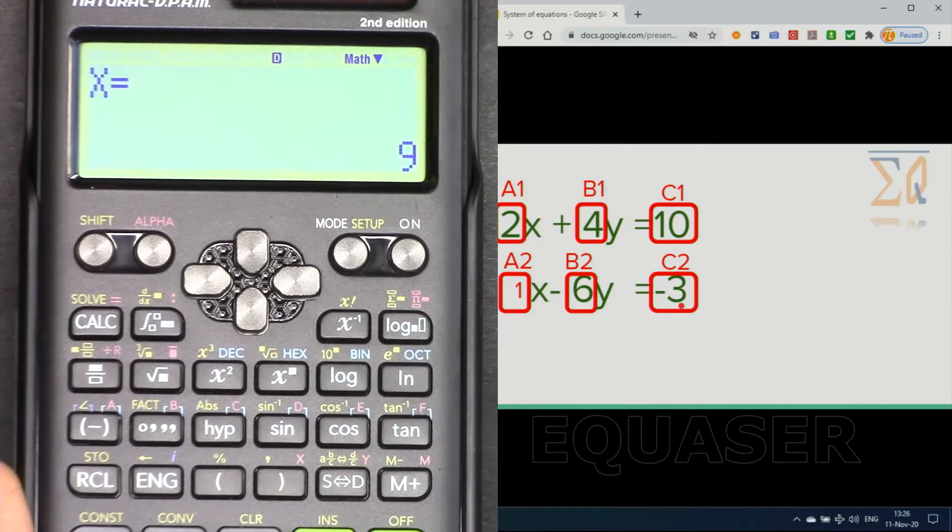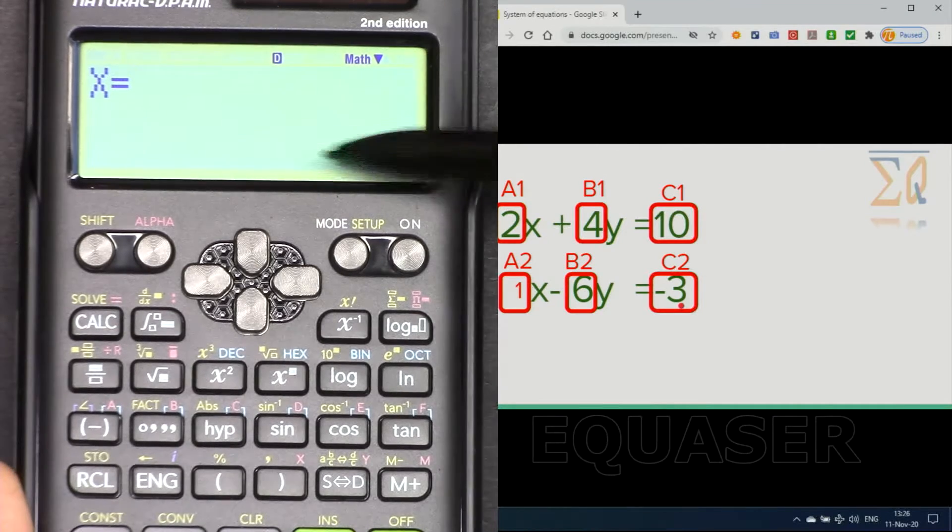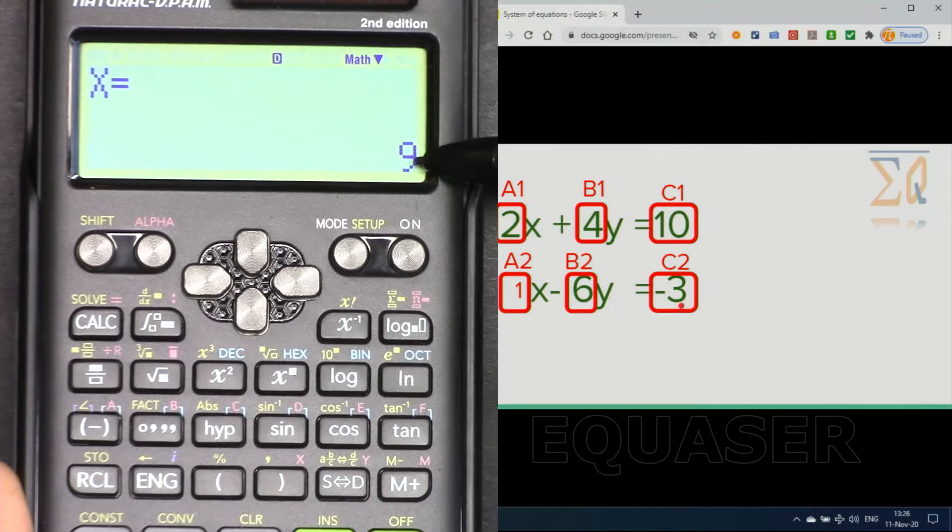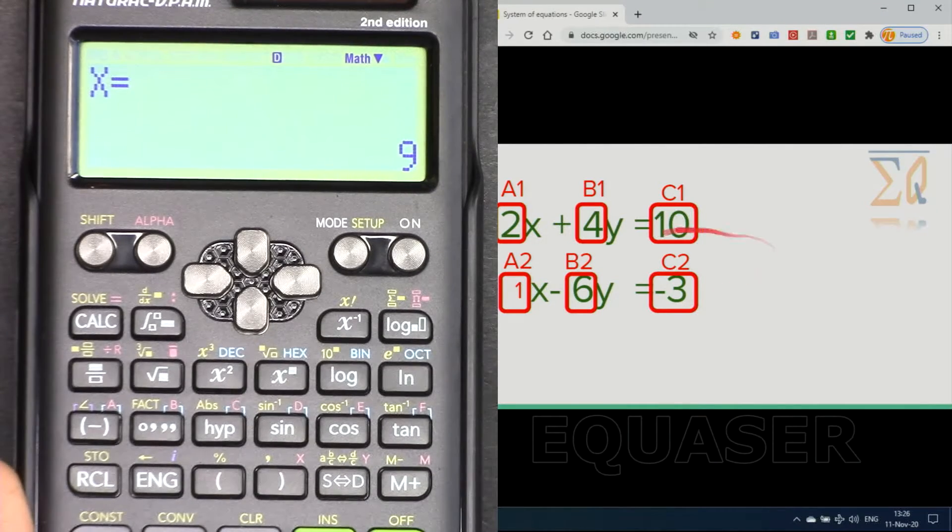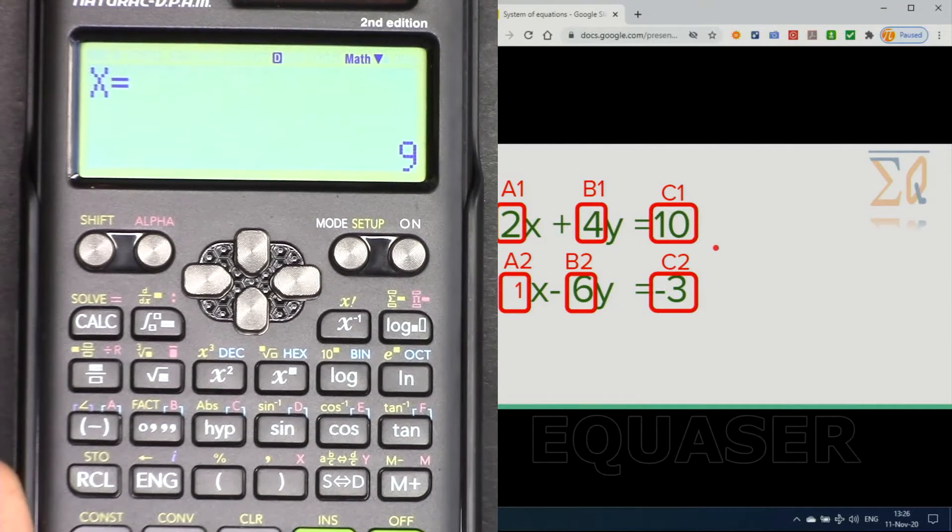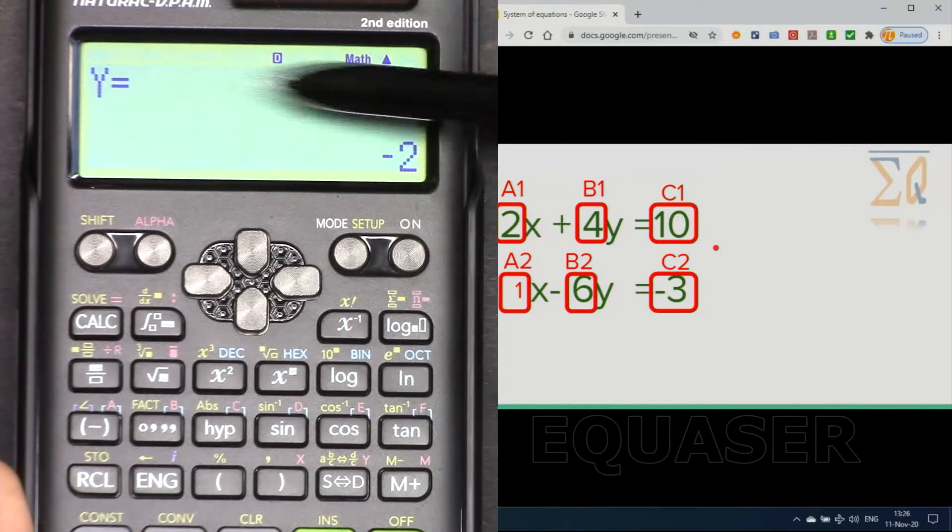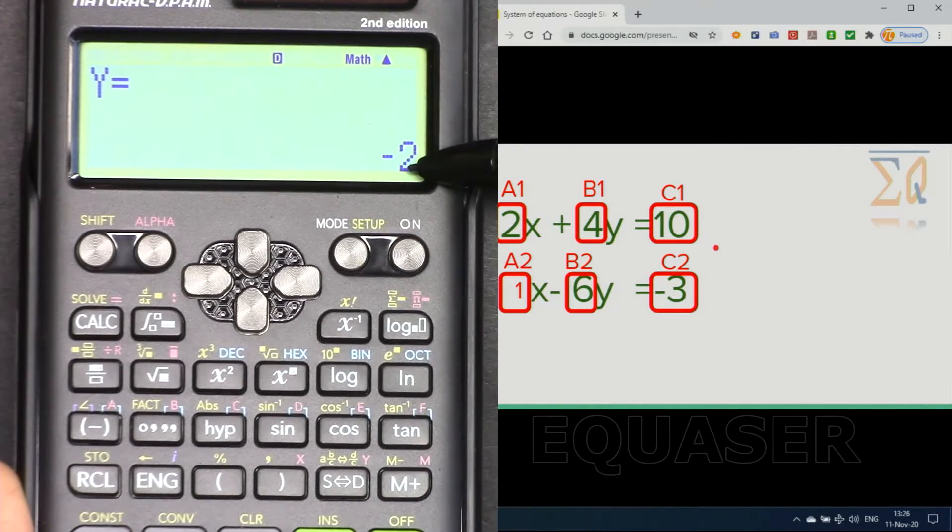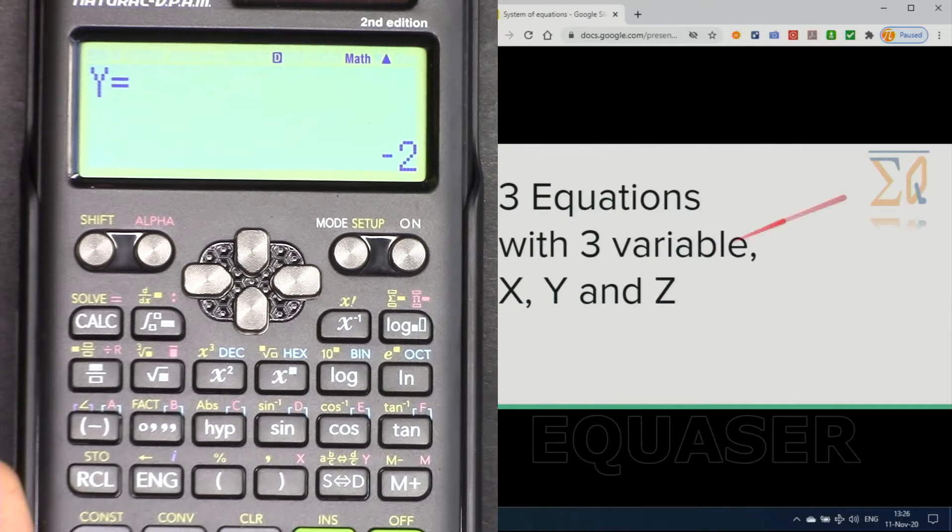Once everything is completed, press finally the equal sign and it shows x is equal nine. So if we enter x equal nine this equation will be true. And then if you press it again it shows y as minus two.